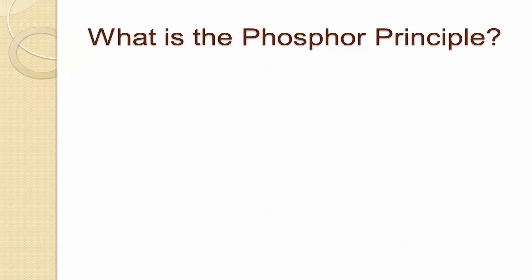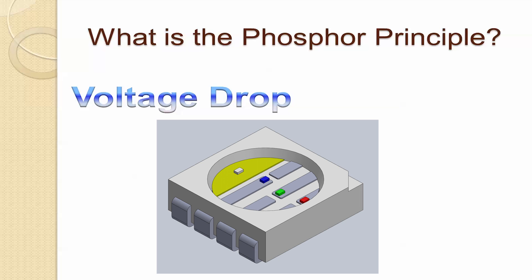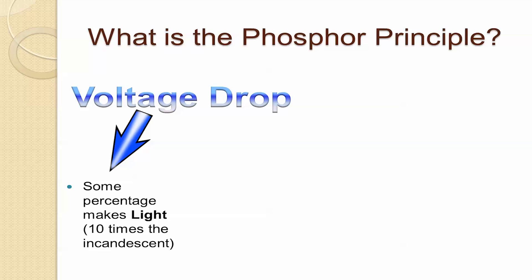What else should we know about LEDs? We have something called the phosphor principle. The phosphor creates a voltage drop when the current passes through from the anode to the cathode — approximately 2.7 volts for a red LED and about 3.7 volts for a green LED.